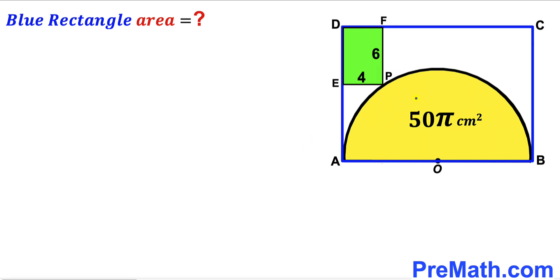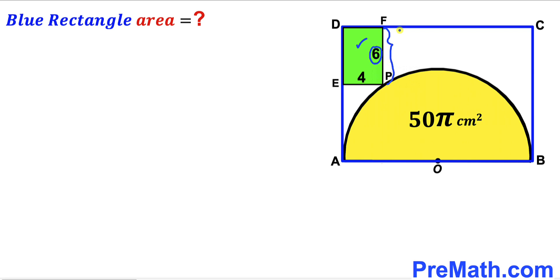Welcome to PreMath. In this video we have a yellow shaded semicircle with center O and a green shaded rectangle DEPF fully confined in a blue rectangle ABCD, such that point P is the only point of their contact. The area of the yellow semicircle is 50π cm², the green rectangle has length 6 cm and width 4 cm. Our task is to calculate the area of blue rectangle ABCD.